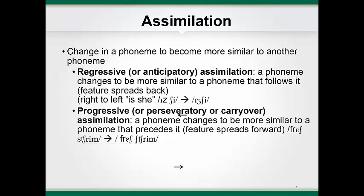Assimilation can occur in two directions and you will need to be able to identify the direction of assimilation. Regressive assimilation, or anticipatory assimilation, occurs when a phoneme changes to become more like a phoneme that follows it. It's called anticipatory assimilation because the earlier phoneme is anticipating the pronunciation of a following phoneme. Another term is regressive assimilation because the feature of the later phoneme is spreading back onto the earlier phoneme. An example is when the z sound in "is" changes to zh in the phrase "is she," changing in place of articulation from alveolar to palatal in anticipation of the upcoming palatal sound sh.